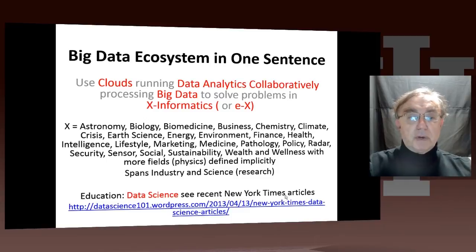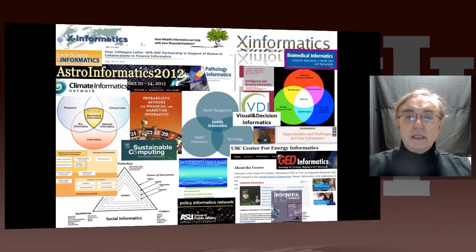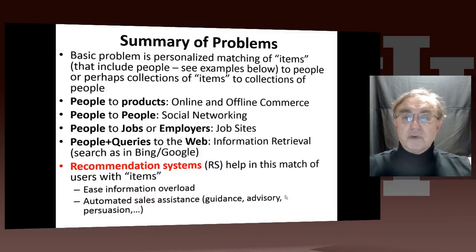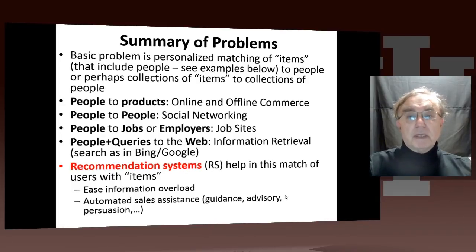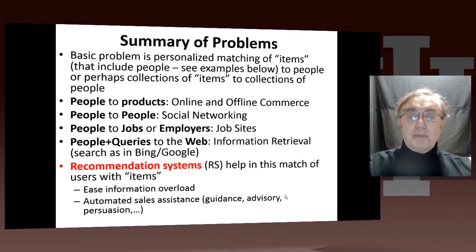We're solving problems here in lifestyle informatics. And here's our nice collage. First, we start with a little bit of recap from the previous unit. This is roughly the same slide as was present in the previous unit, but I think it summarizes what we're trying to do extremely well. We're matching items — which includes people — to people, or collections of items to collections of people.